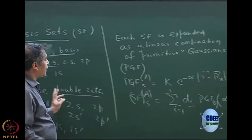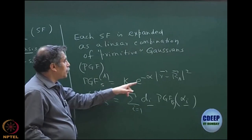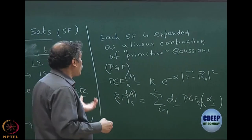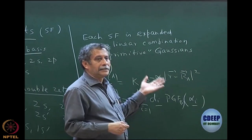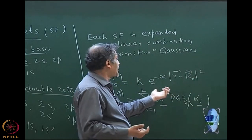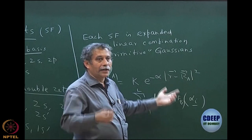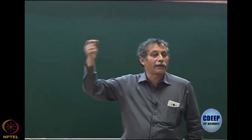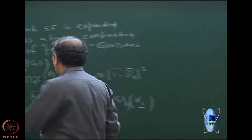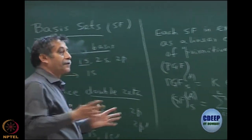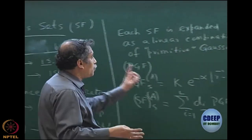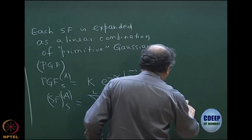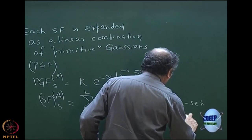Two important differences between Slater and primitive Gaussian: at r equal to 0, the derivative of the Gaussian is 0, whereas for the Slater it is non-zero. At r equal to infinity, the Gaussian decays much more rapidly than the Slater because of the r-squared term. Because of these differences and differences in the intermediate region, a Slater cannot be mapped to one primitive Gaussian. It has to be a combination of primitives, and this combination is preset from an atomic calculation. These coefficients are not part of the SCF.